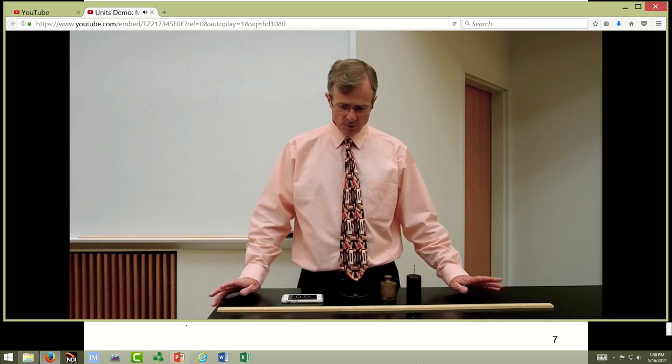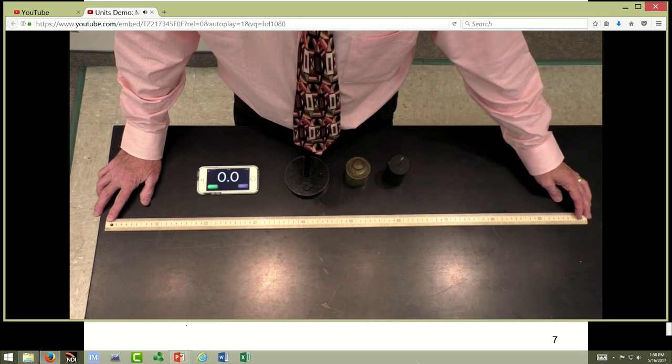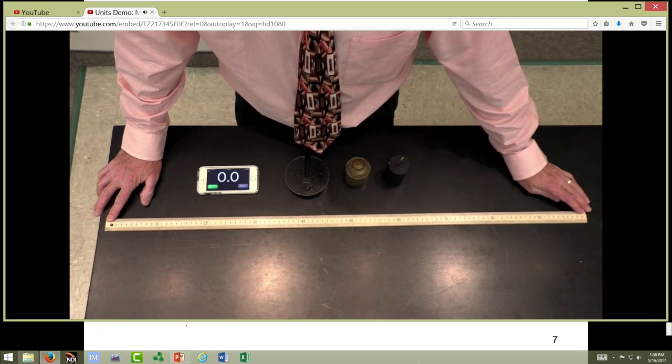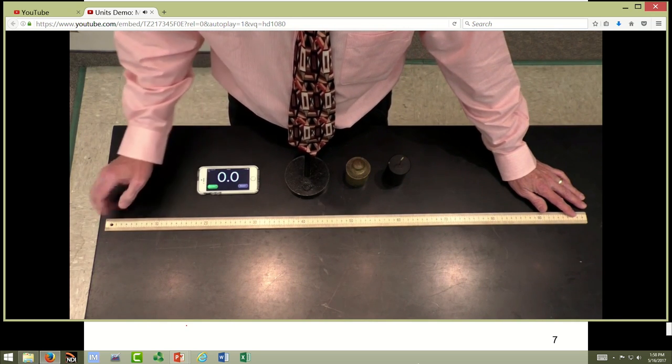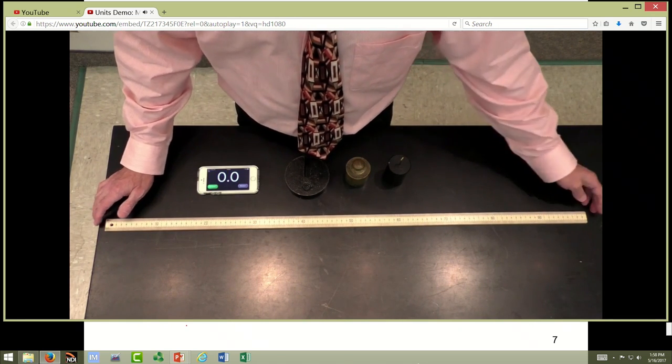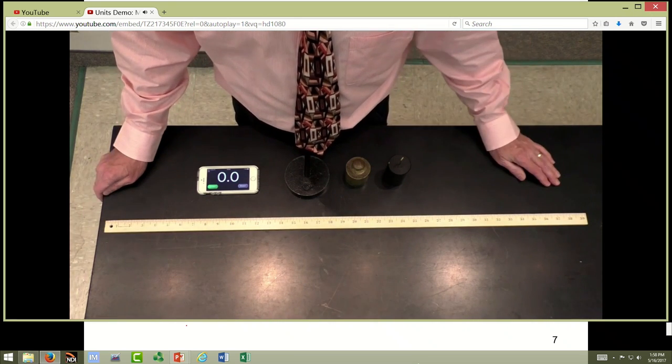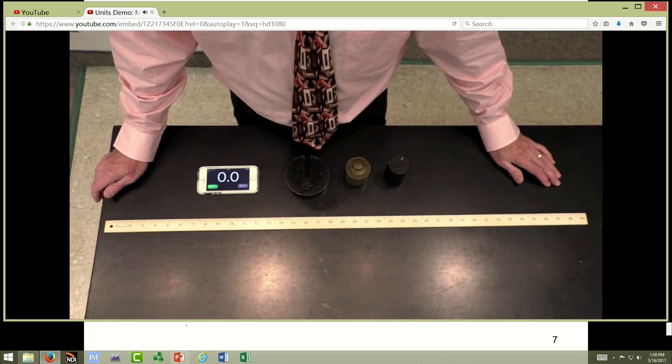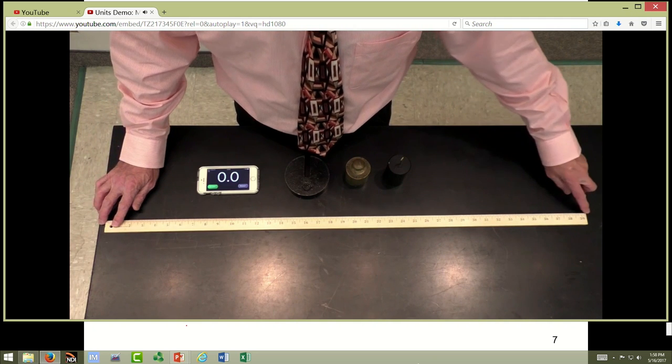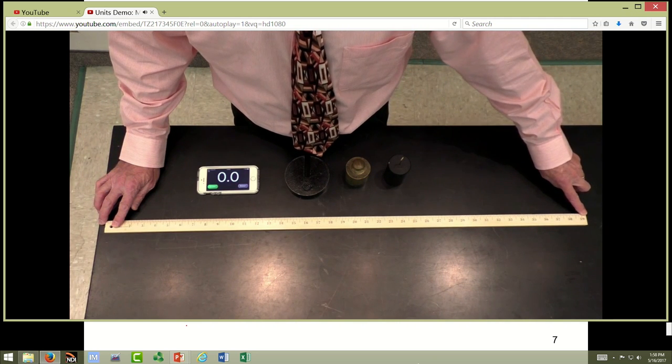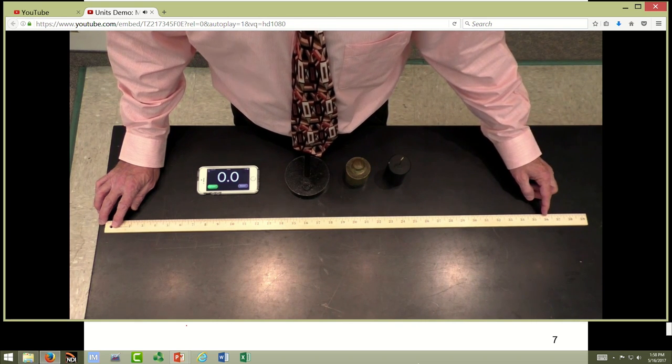The SI system uses the meter to measure lengths. So this is a meter stick. Its length is one meter, which works out to 100 centimeters. A centimeter being about the size of your little finger. Converting a meter into units we normally use in America, which are called the British Engineering Units, the meter translates into about 39 and a little bit extra of inches. So one yard would be 36 inches. So a meter is 3.3 or so inches larger than a yard.